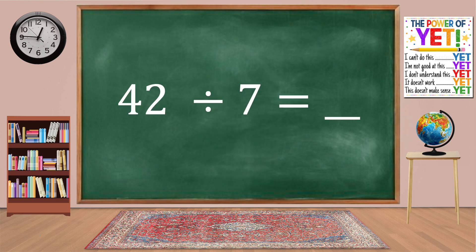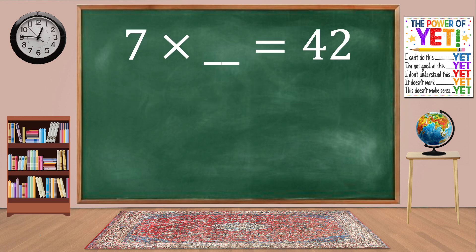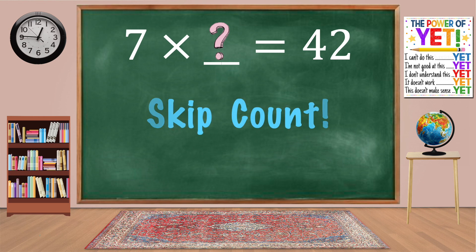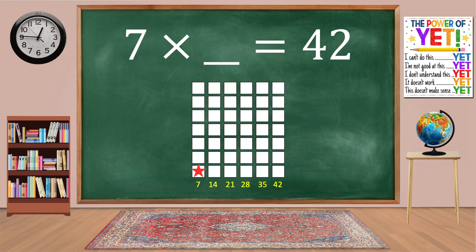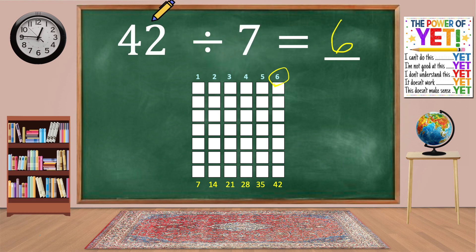42 divided by 7 equals blank. Our related fact is 7 times what equals 42? Skip count: 7, 14, 21, 28, 35, 42. We have six columns. 7 times 6 equals 42. 42 divided by 7 equals 6.